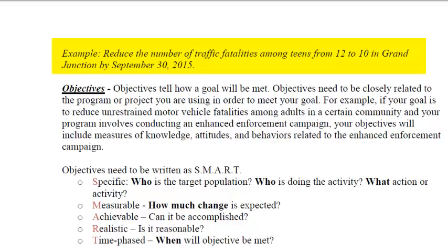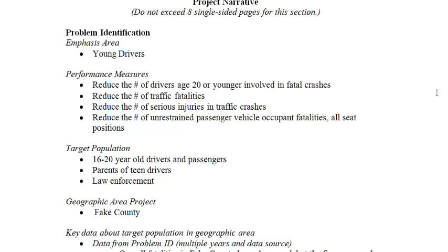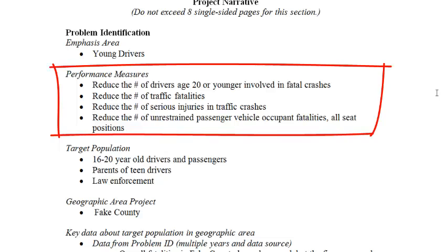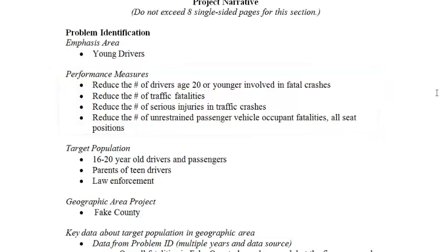So let's go back to our project rationale and just remind everyone what target population we selected. These are the performance measures that we have in our outline so far for the problem identification section. The main one is reducing the number of drivers age 20 or younger involved in fatal crashes. And I know we've been adjusting this outline as we go because we are kind of fine-tuning things. During the last webinar we added a couple of target populations because we found some strategies that we wanted to really target.